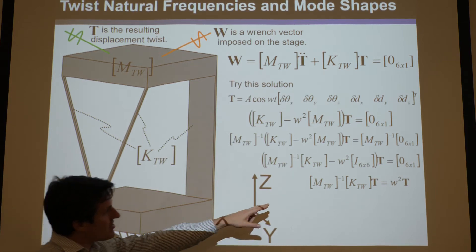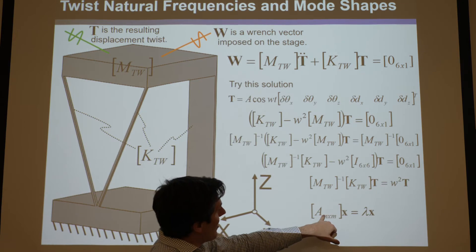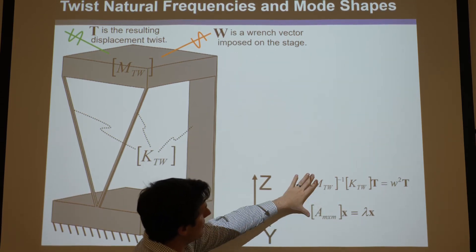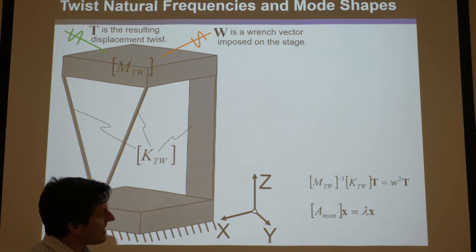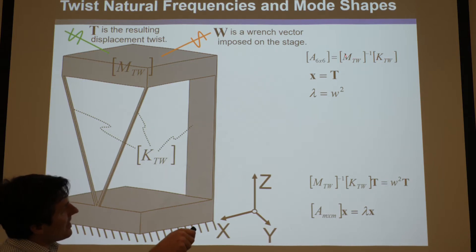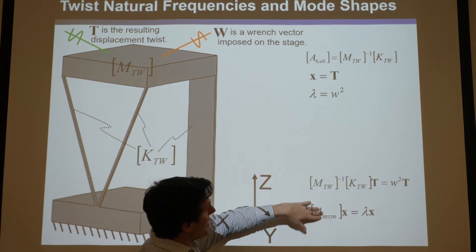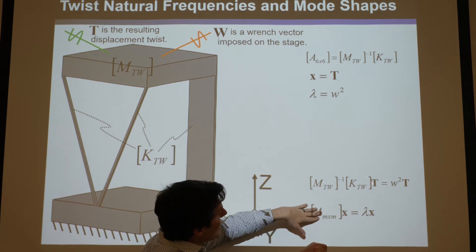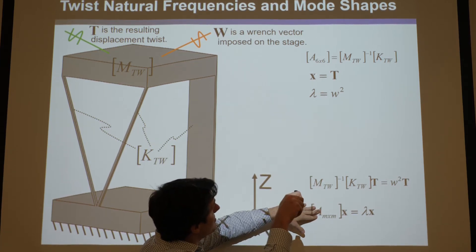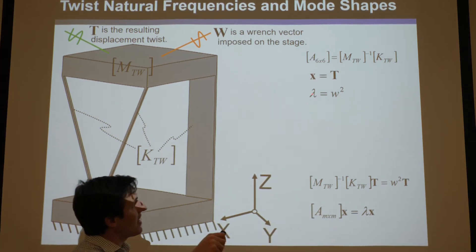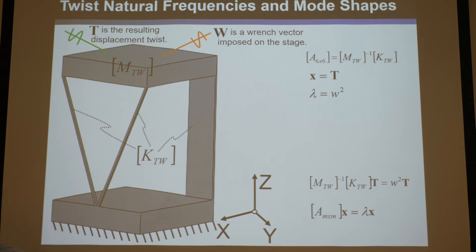We got this equation, and you might see that it looks pretty similar to the eigenvector equation we just found. If you take M inverse times K times T, that is essentially a six by six A matrix; T is a six by one vector — essentially the x here — and omega squared is essentially the scalar value lambda.